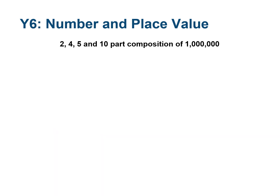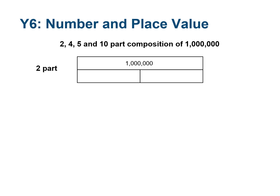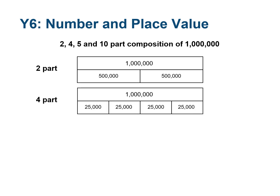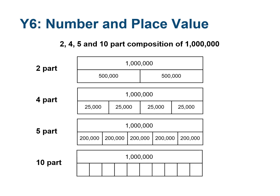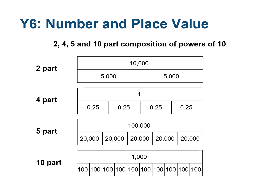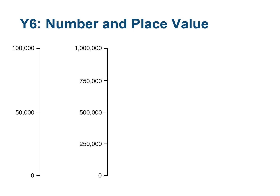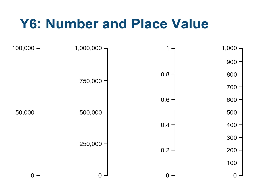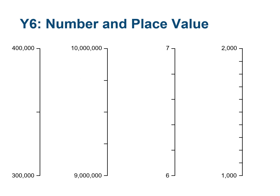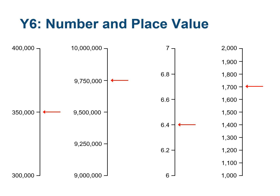Pupils need to be able to decompose powers of 10 into 2, 4, 5, and 10 parts. This shows the decomposition of 1 million into 2 parts, 4 parts, 5 parts, and 10 parts. Pupils need to be able to decompose any integer power of 10 up to 10 million in these four ways. This relates to number as measure because it allows pupils to use common graphing units. Pupils should be able to complete and read scales for integer powers of 10 up to 1 million, marked in 2, 4, 5, and 10 parts, and identify numbers marked on continuations of these scales.